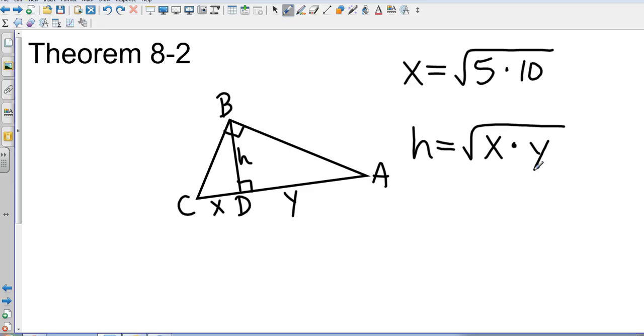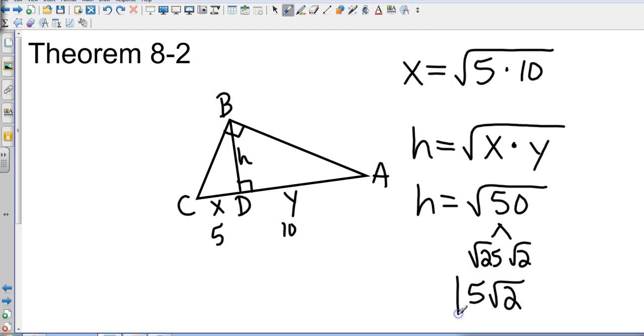H, which is the altitude, is the geometric mean of X and Y. Just using the example we did before, actually we did 5 times 20, but I'm going to do 5 times 10. If that was 5 and that was 10 and they wanted you to find the altitude, then that would simply be the altitude is equal to the square root of 50. That's going to break down into the square root of 25 times the square root of 2. So that altitude we can find is 5 square roots of 2 using the side lengths of 5 and 10.